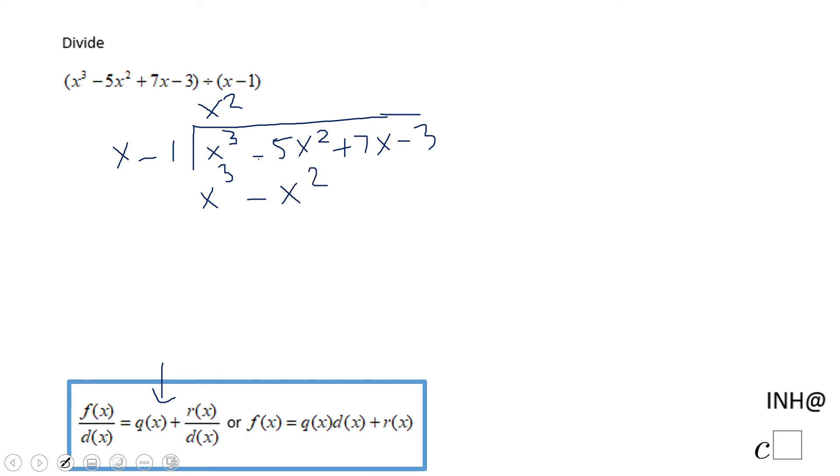Here, the next thing we're going to do is a subtraction. If you notice, these two guys cancel out, and we have negative 5x squared minus negative x squared, that will be negative 4x squared plus 7x.